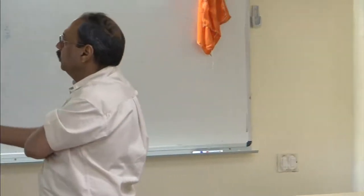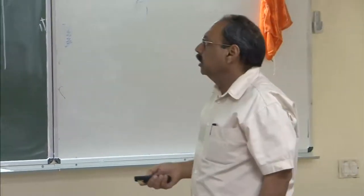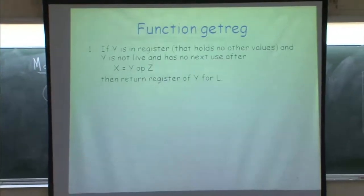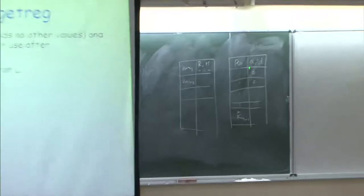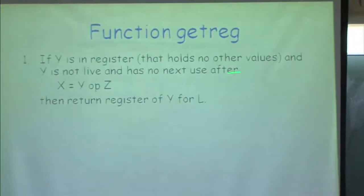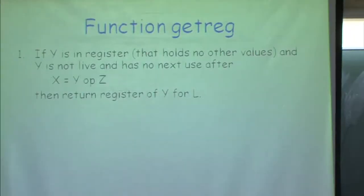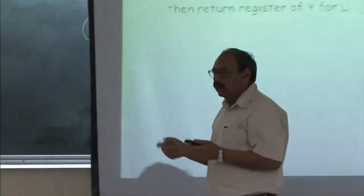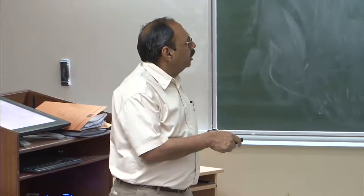Now let us look at the getreg function. Getreg is invoked to return a location for computation. If y is in some register that holds no other value, and y is not live and has no next use after this point, then we can reuse that same register. If y is in R0, R0 holds no other variable, and y has no next use, we free R0 immediately after this instruction and getreg returns it.